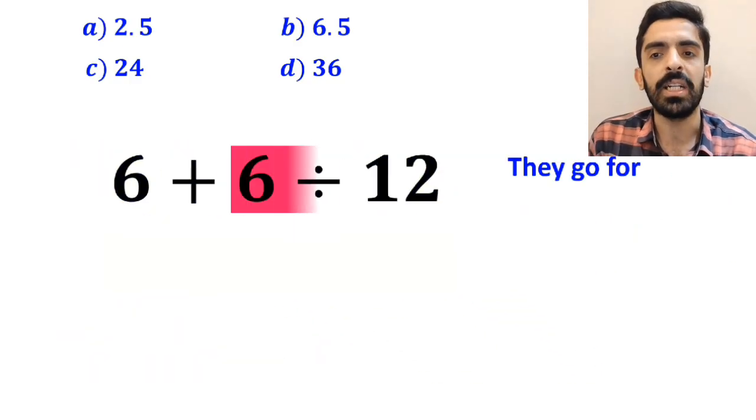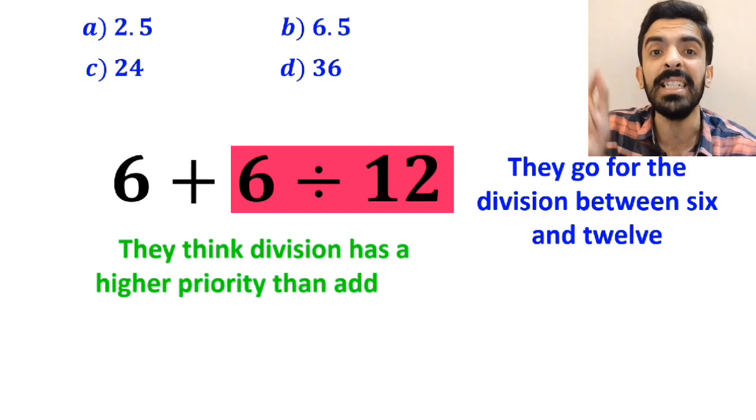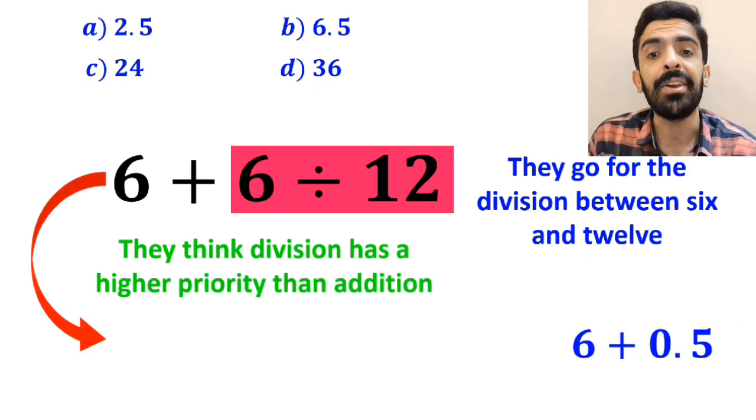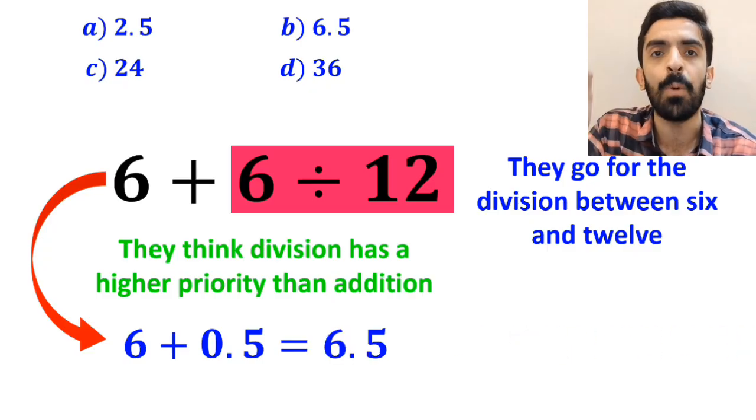Then, they go for the division between 6 and 12, because they think division has a higher priority than addition. And they rewrite this expression as 6 plus 0.5, which ultimately gives them the answer 6.5.